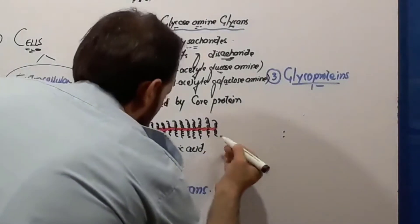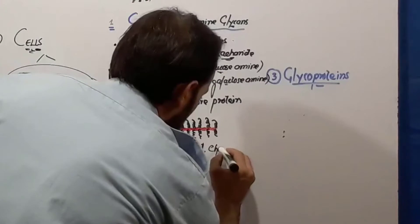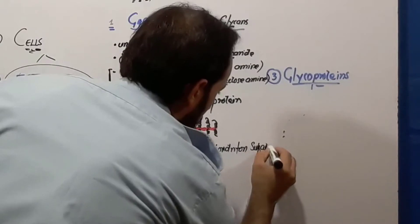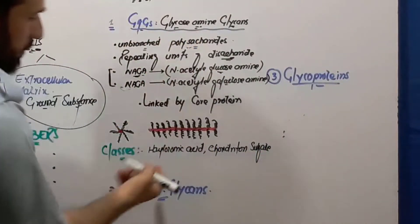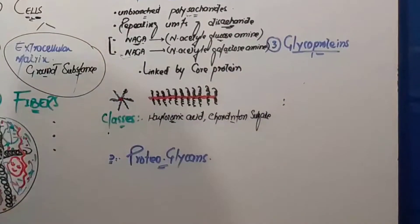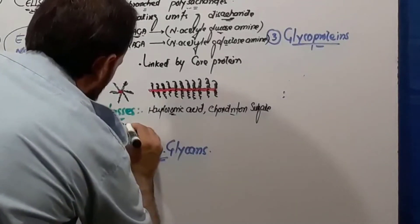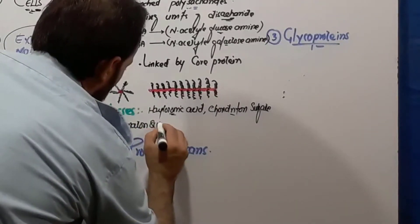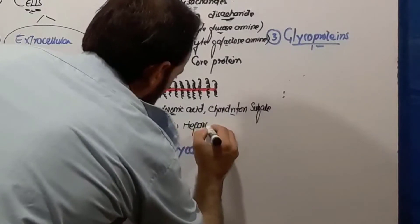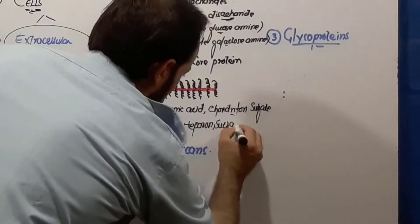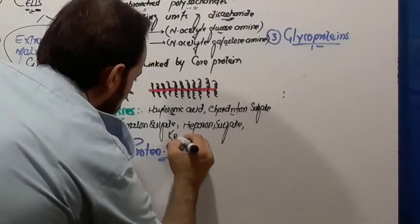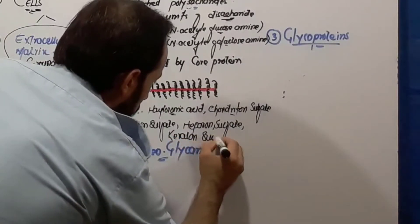Then there is another class which is called chondroitin sulfate. Then there is dermatan sulfate, which is present in your skin. Then there is another class called heparan sulfate. And then there is another class called keratan sulfate.